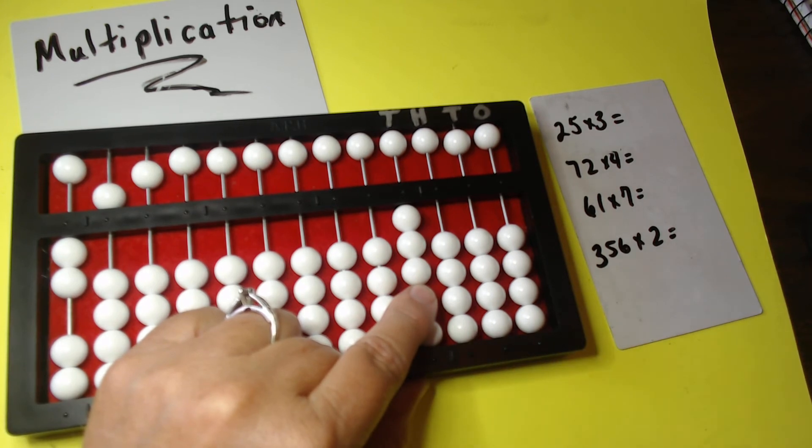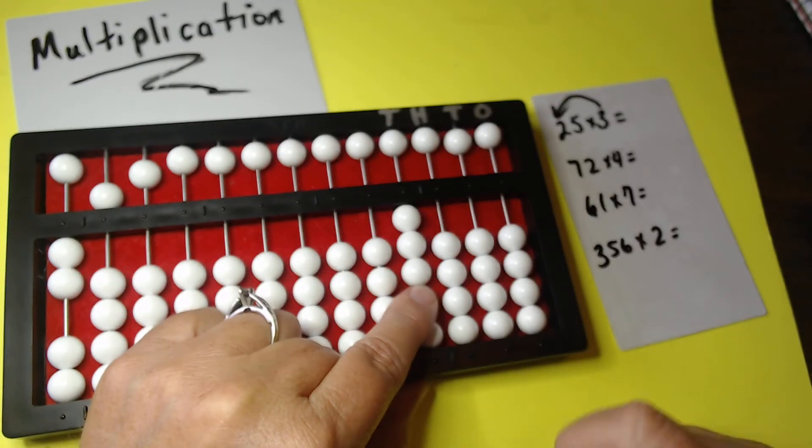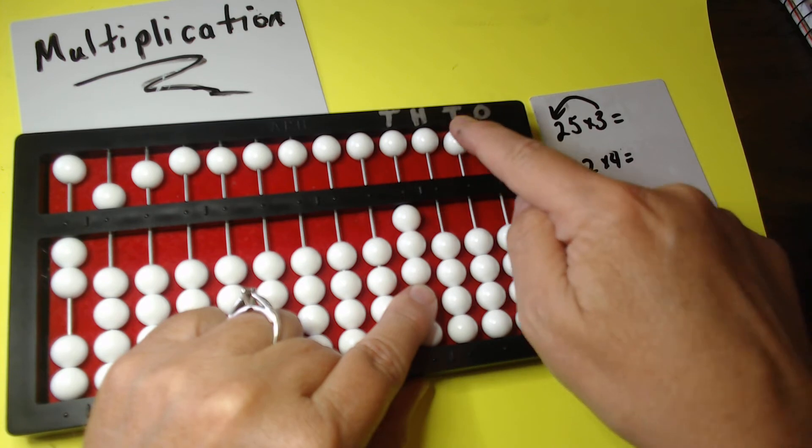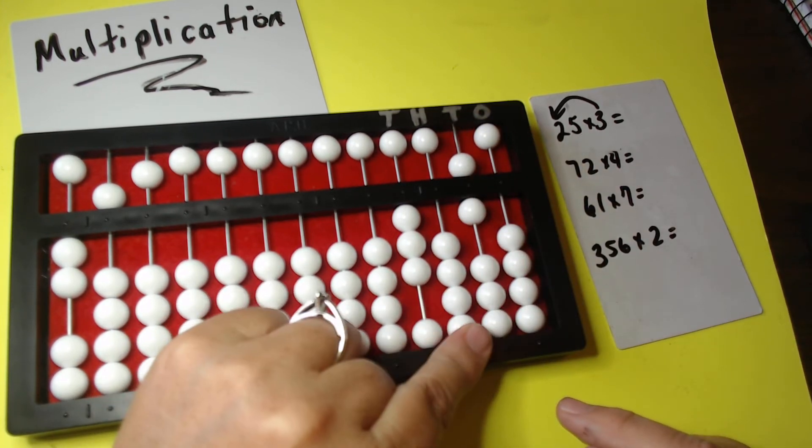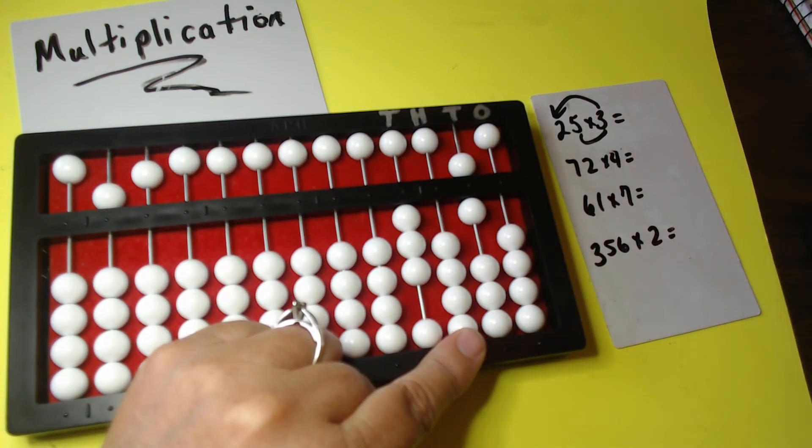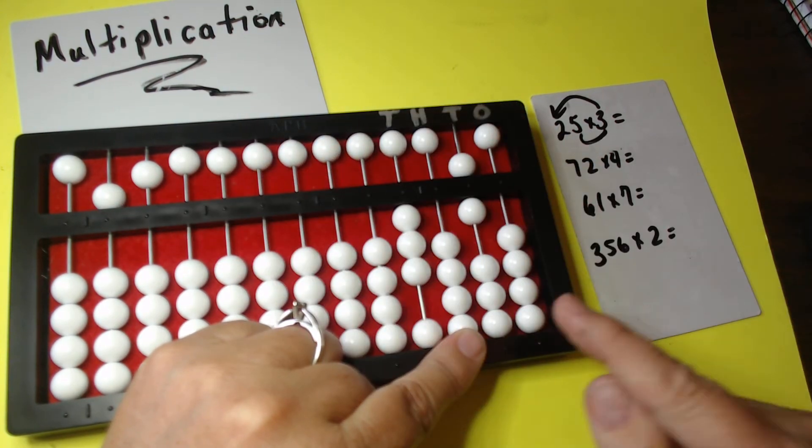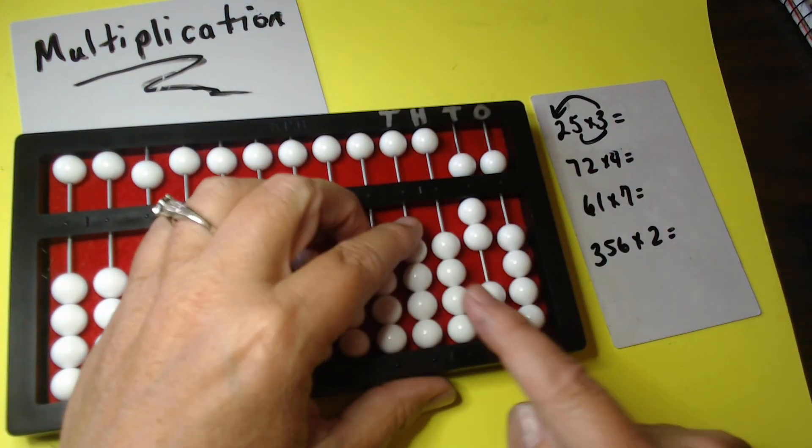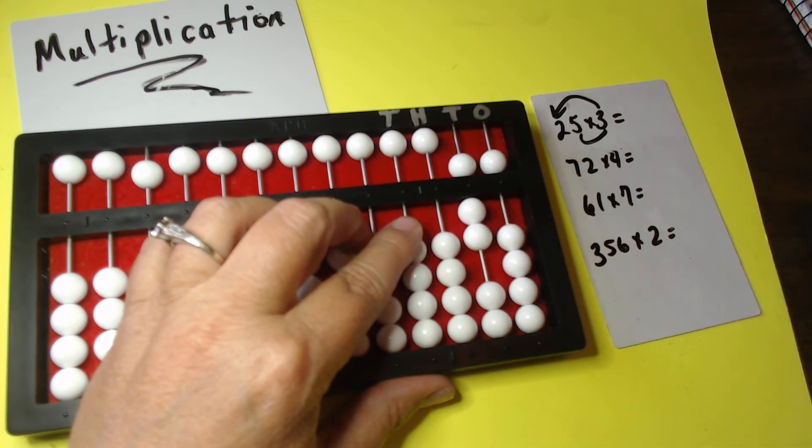So we're going to do 3 times 2. So this 3 times this 2, and that is 6. So I'm starting here, 06. I'm through here. I'm going to move my finger over to keep my place. I'm going to clear the 2 because we're through with that. Now we're going to do 3 times 5. This 3 times this 5, that's 15. So I'm going to start here. 1, 5. I'm through with that. I could clear this as well because that was part of the problem. That leaves me with an answer of 50, 60, 75.